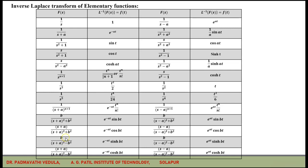L⁻¹{b/((s+a)²-b²)} = e^(-at)sinh(bt). L⁻¹{b/((s-a)²-b²)} = e^(at)sinh(bt). Wherever you find a minus sign in the middle, you get hyperbolic functions. L⁻¹{(s+a)/((s+a)²-b²)} = e^(-at)cosh(bt). L⁻¹{(s-a)/((s-a)²-b²)} = e^(at)cosh(bt). We will use all these inverse Laplace transforms wherever required when solving examples in this unit.